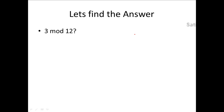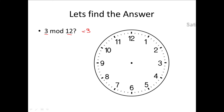We all know how to find n mod k. For instance, if n is 3 and k is 12, the result is 3. Using a 12 o'clock reference, when I say 3 mod 12, I count 1, 2, 3 in the clockwise direction. So the answer is 3.